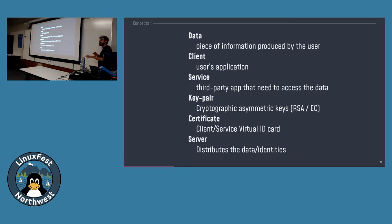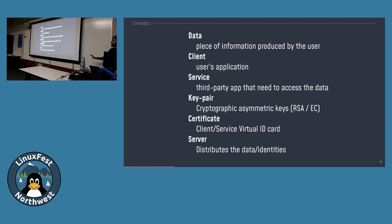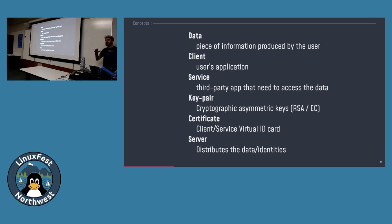First, a short lexical point. When I speak of 'data,' this is just pieces of information produced by the user. The 'client' is the client application the user uses on their mobile, desktop, or web. A 'service' is a third-party app like your health insurance that wants to access some data. A 'key pair' is a cryptographic key pair - private and public key. A 'certificate' is a virtual ID card in the common sense of cryptography. And the 'server' is the part of the application responsible for managing identities, ninja keys, and passing data between different services.